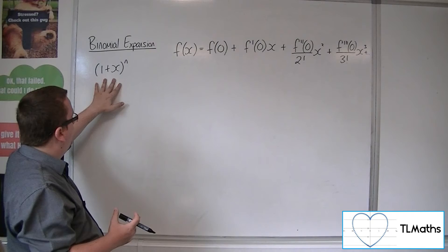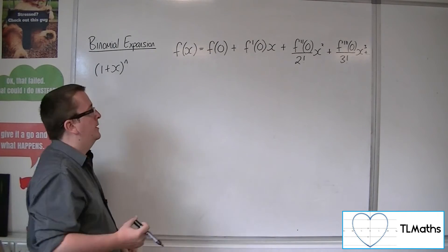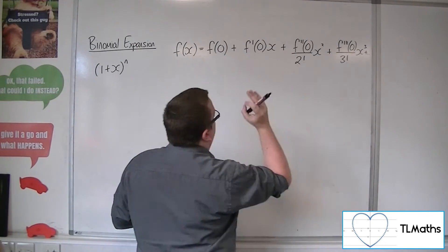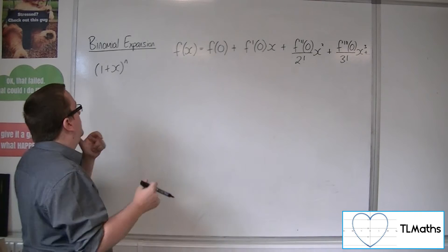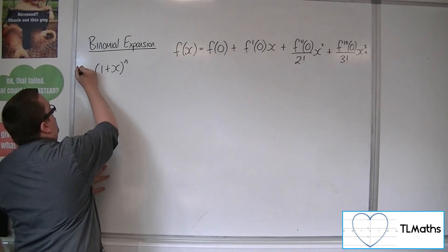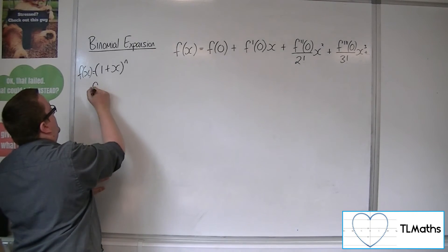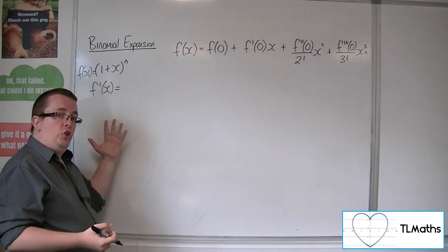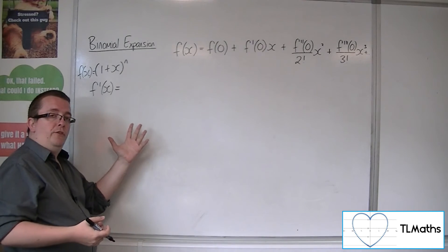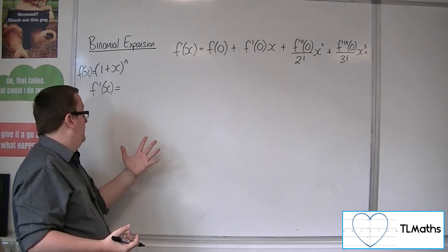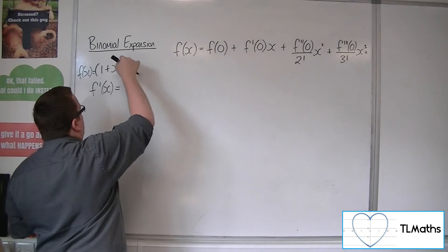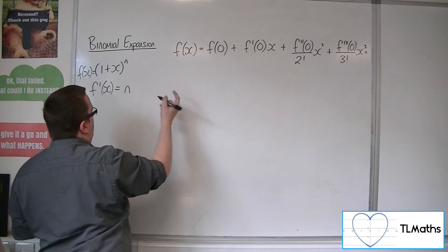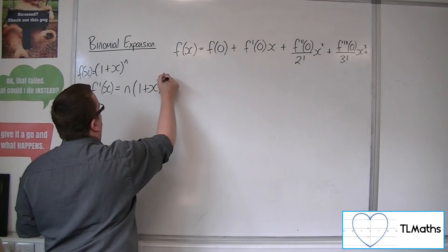We use this on 1 plus x to the n. As part of this I need to find the first, second, and third derivatives. Writing it as f(x), the first derivative of (1+x)^n uses the chain rule — if you haven't met the chain rule for differentiation yet, you should see that first. The n comes down to the front, the derivative of what's inside is 1, giving us n times (1+x) to the power n minus 1.